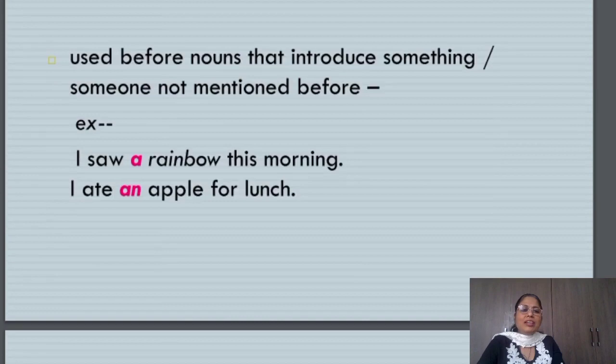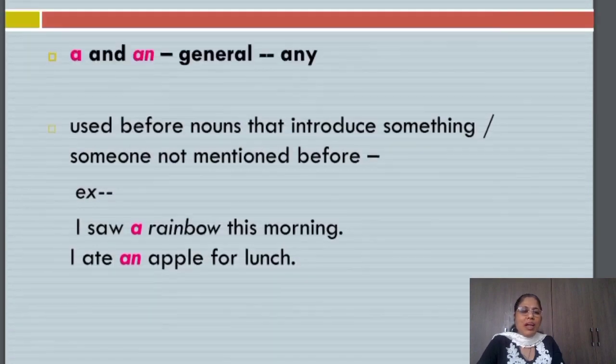Let us have a look at the indefinite article first. A or an mean any. So if I put a or an in front of any noun, it means any one of that object or person.